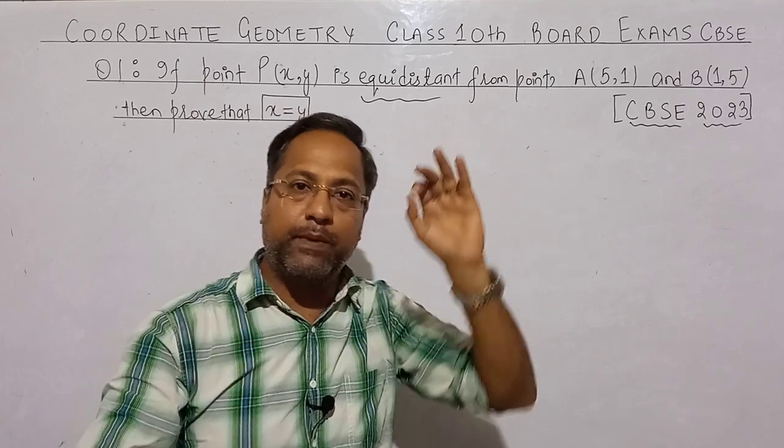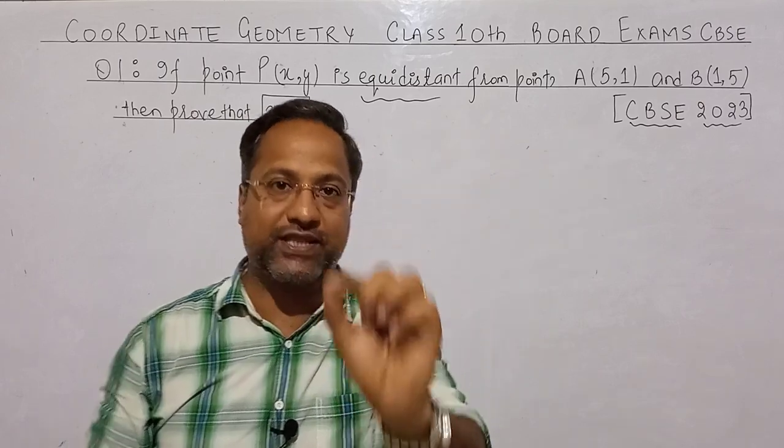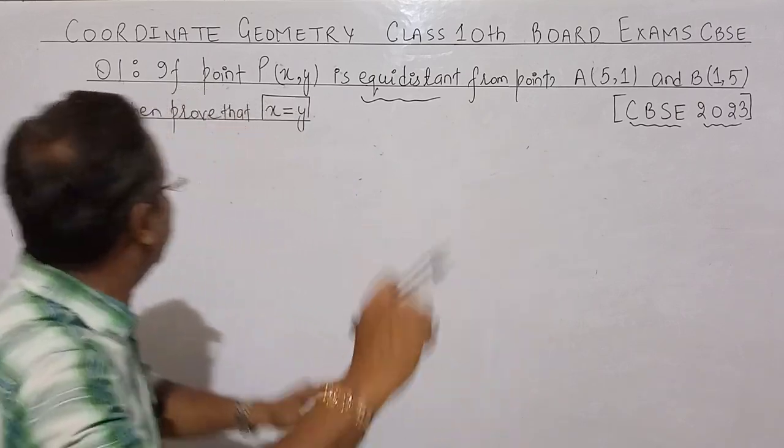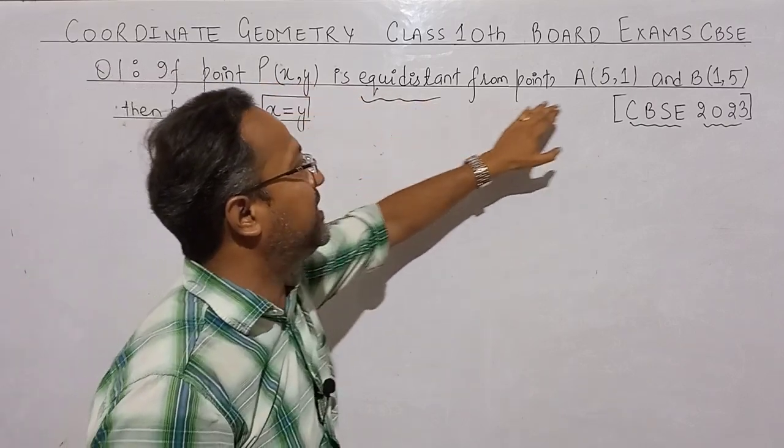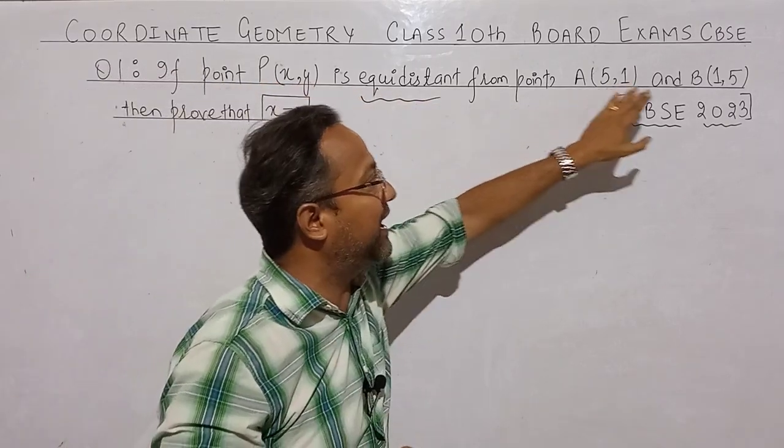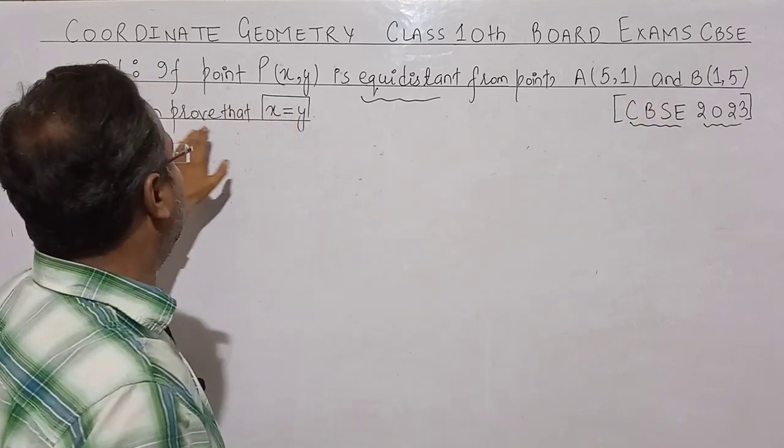We will have a question based on the distance formula. What is the question? If point P is equidistant from points A(5,1) and B(1,5), then prove that x equals 2y.